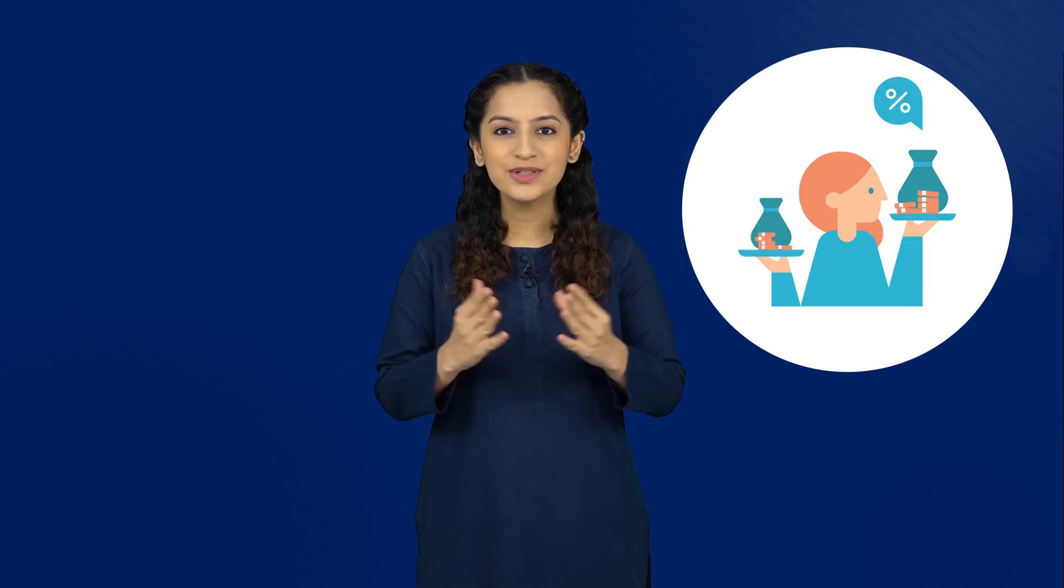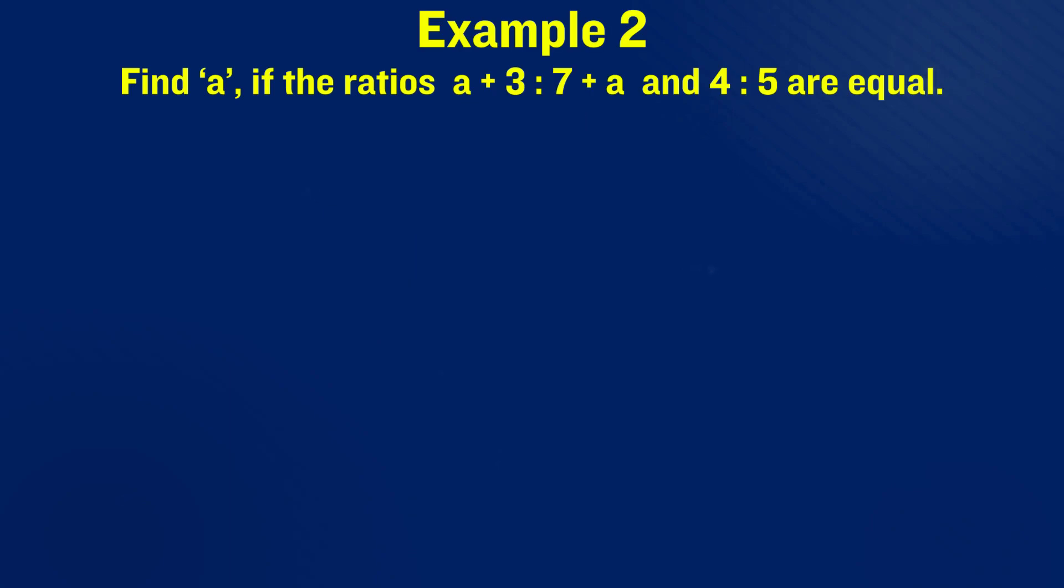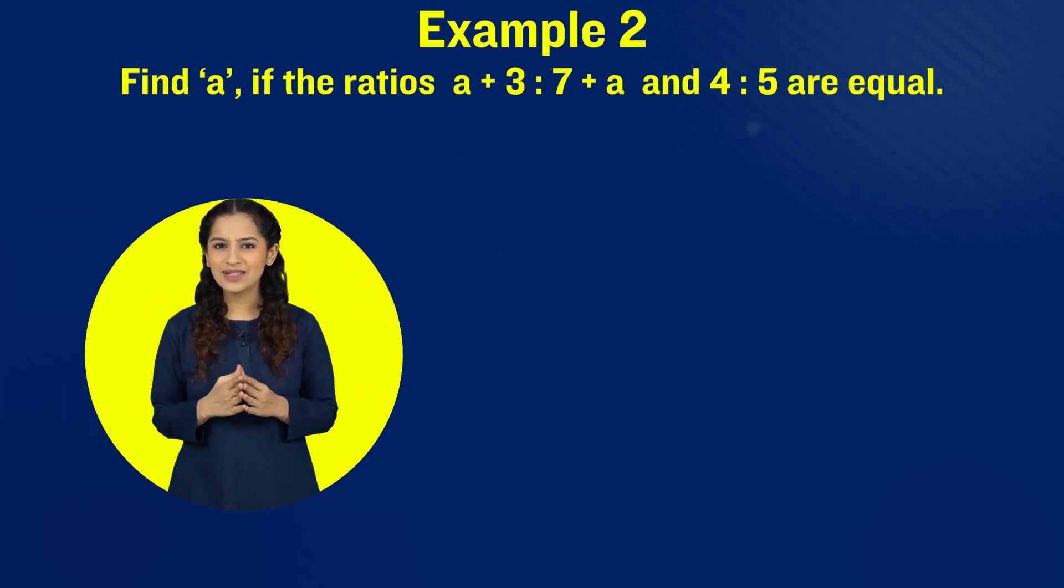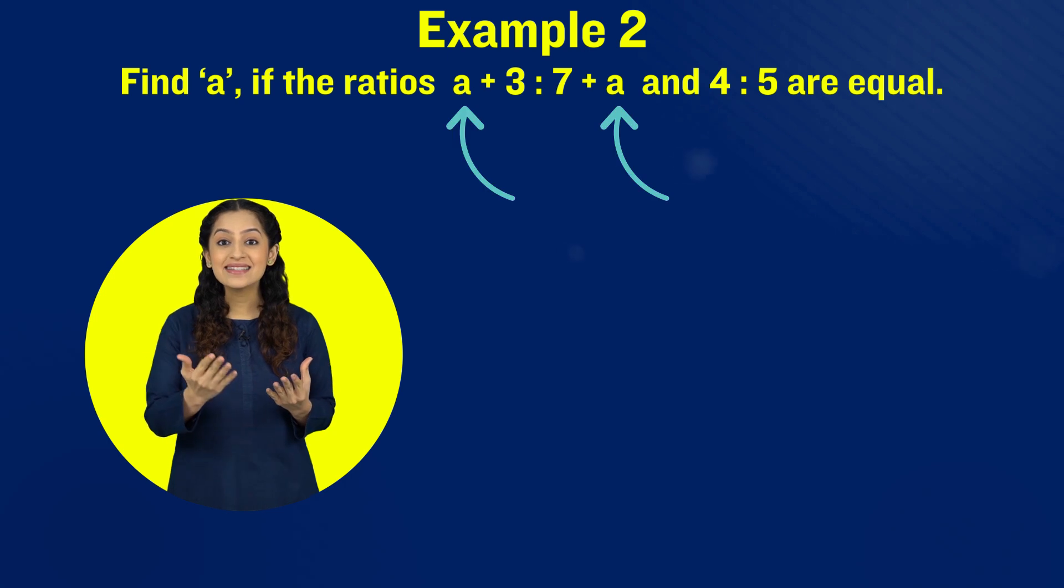Ratios are not only useful for comparisons or food recipes, they have other purposes too, like finding out unknown values. Here's an example that says this ratio on the left is equal to this one on the right. Can you spot the unknown value? Yes, it's this 'a', and our job is to find its value.